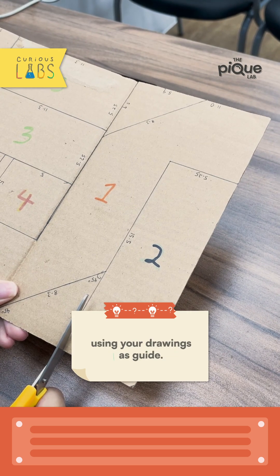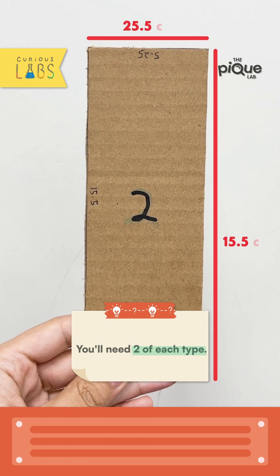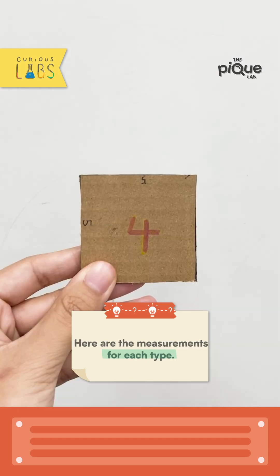Cut out the pieces with scissors using your drawings as guide. You'll need two of each type. Here are the measurements for each type.